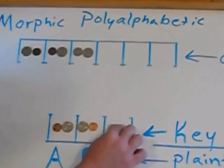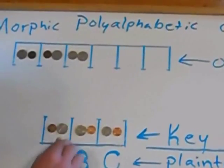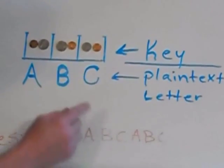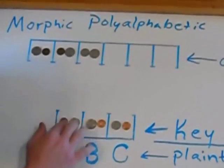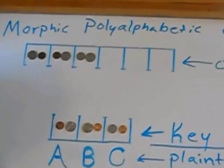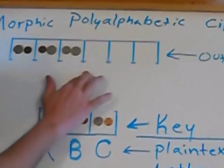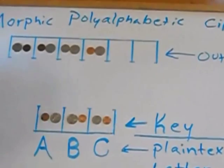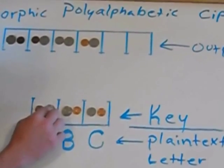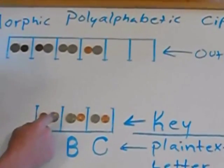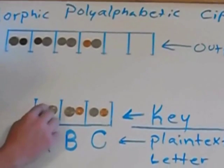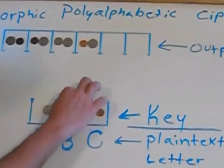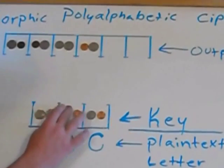So then we go to our next letter A, and that becomes that in the key. And then we go to the next letter A and we see that it's a quarter and a penny so we put that up there in that order, and then select at random either the penny or the quarter and swap that with something else in the key.